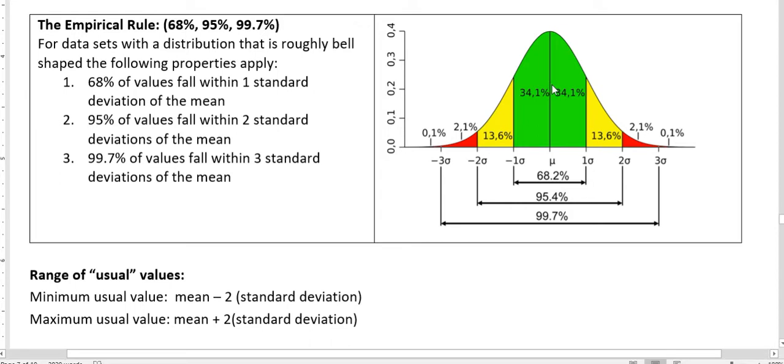And to the left are 34.1 percent of the data values, which makes a total of 68.2 percent of the data values falling between one deviation to the left and one deviation to the right. Then if we go out another standard deviation...